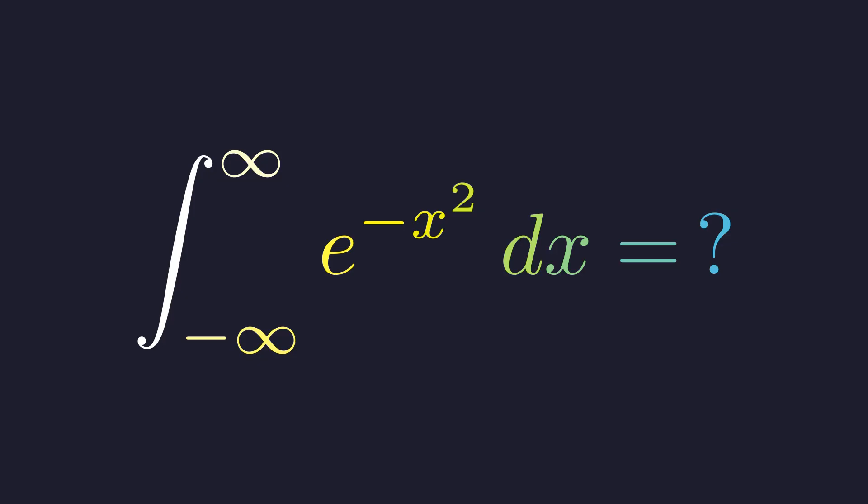We want to find the integral from negative infinity to positive infinity of e to the negative x squared. This shows up everywhere from probability to quantum mechanics. Now at first glance, this looks impossible.